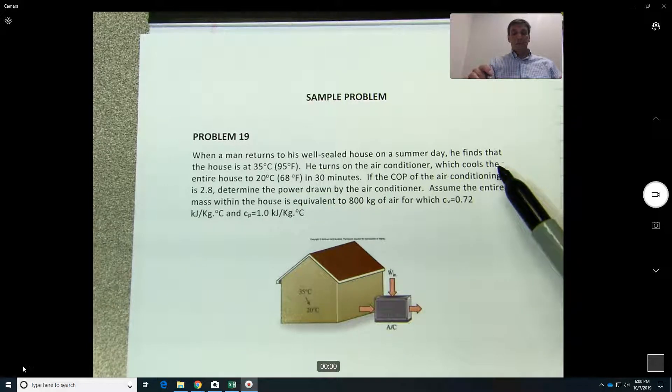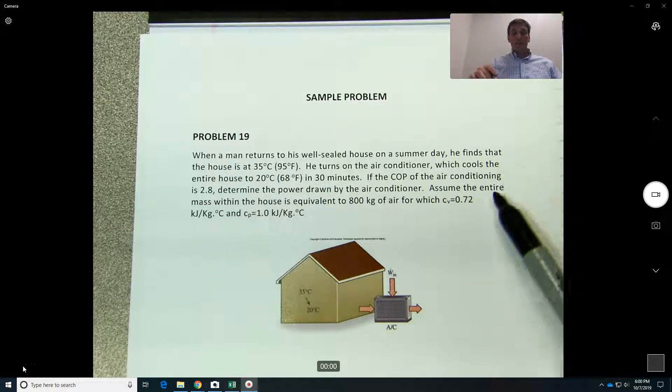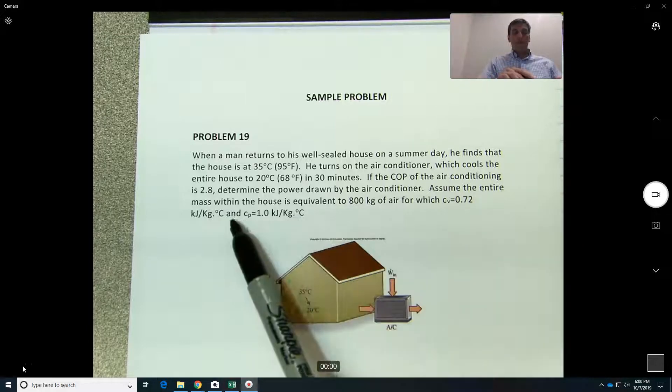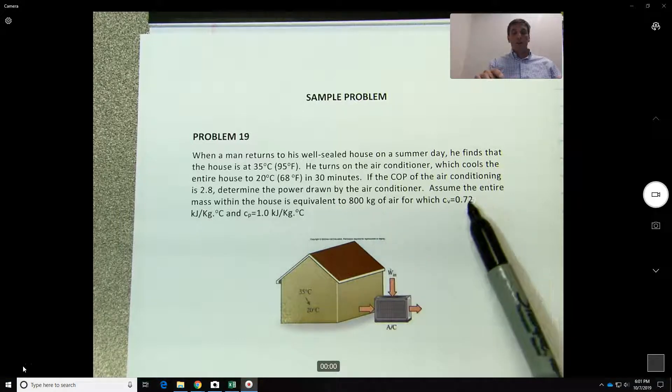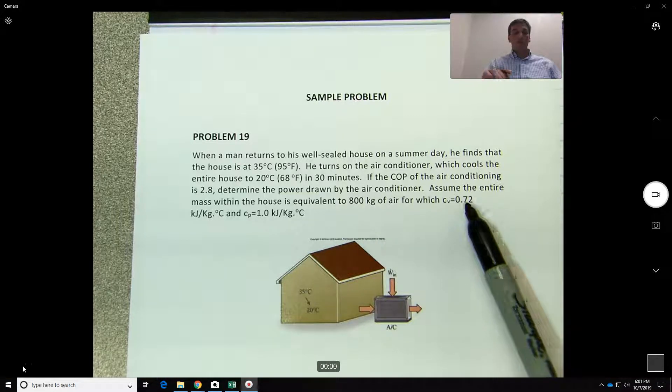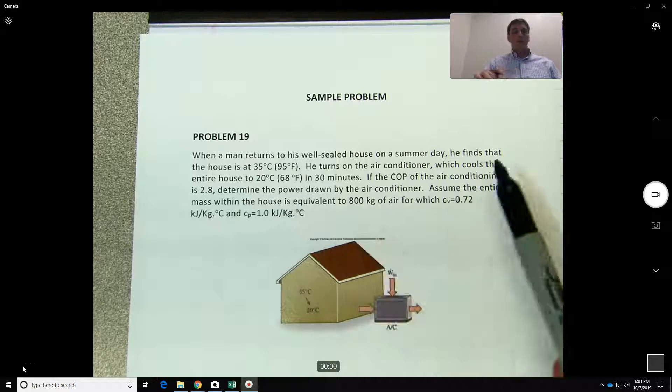So basically here they ask you to assume the entire mass of air within the house to be equivalent to 800 kilograms, for which CV equals 0.72 or CP equals 1.0.